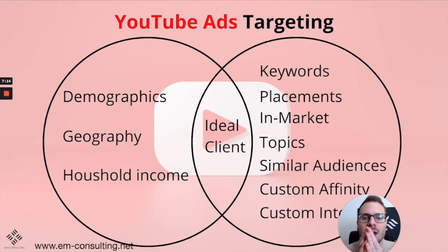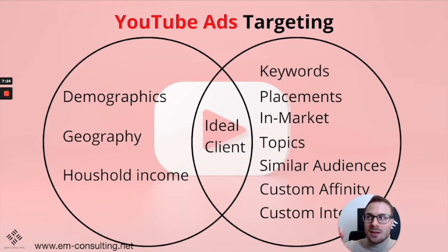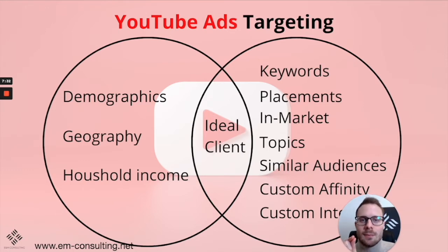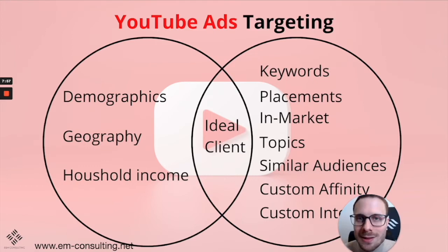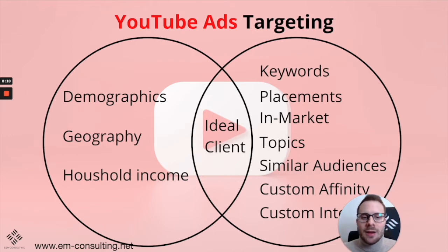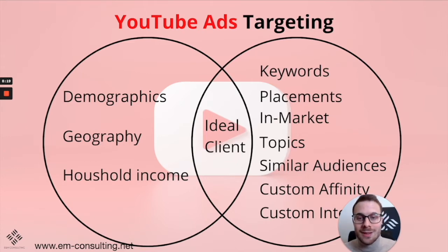Keywords, placements, and custom affinity audiences are more narrowed audiences. In-market audiences, topics, similar audiences, and custom intent audiences are broader. It's more difficult to find an ad that really performs on broader audiences, but once you find one, you can scale it to the moon. In the beginning, concentrate on narrower audiences — it's easier to get your foot in the door. Later, test broader audiences to find winning ads and scale them, since there's a nearly unlimited number of people you can reach there compared to narrow placements. In this intersection, there will be your ideal client.